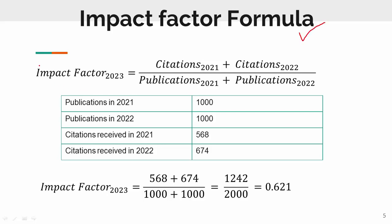To calculate the impact factor of a journal for 2023, we need to know how many papers were published in the last two years — 2021 and 2022. We add both of those together, and we also calculate the number of citations those papers received in those same two years.